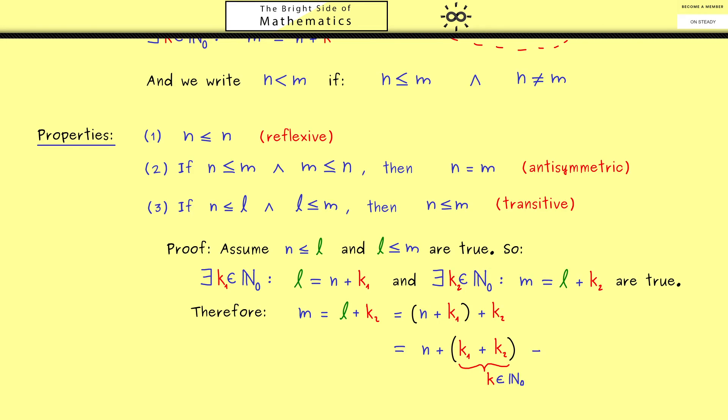We know the addition gives us again a natural number. In other words we now know there exists a k such that m is equal to n plus k. And by definition this is simply n is less or equal than m. With this you should see we have in fact proven the implication in 3.